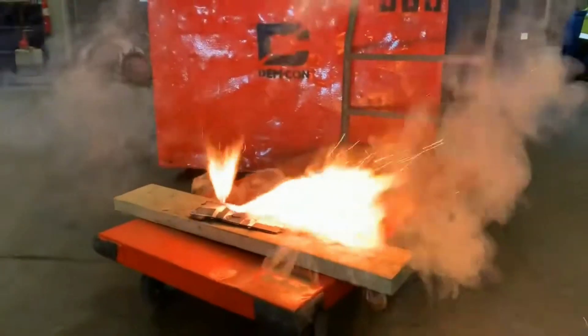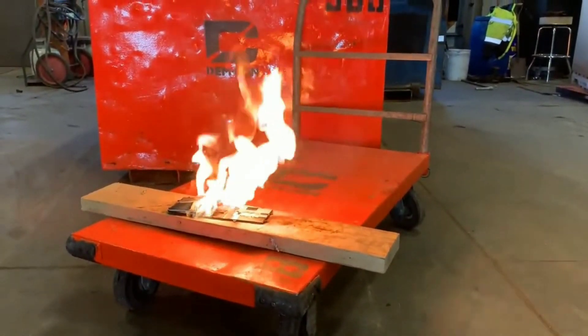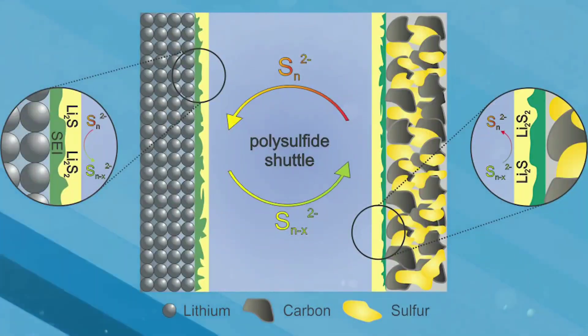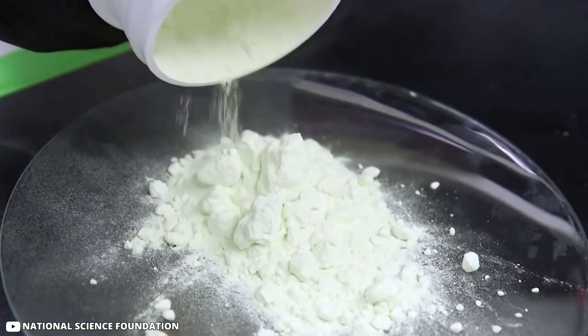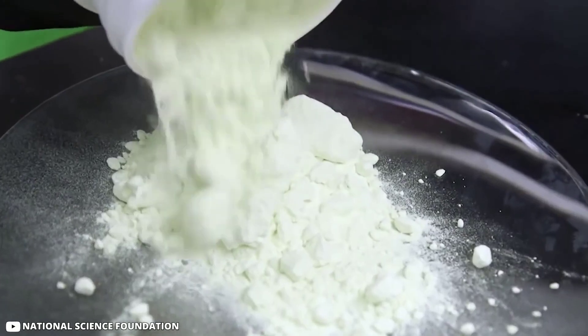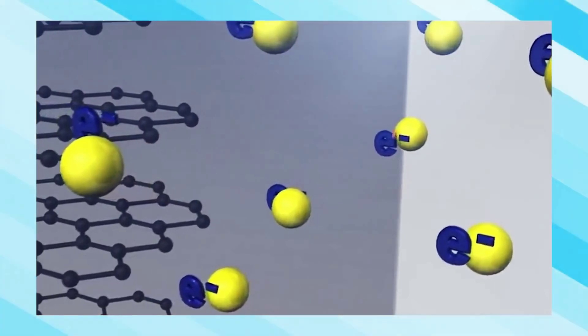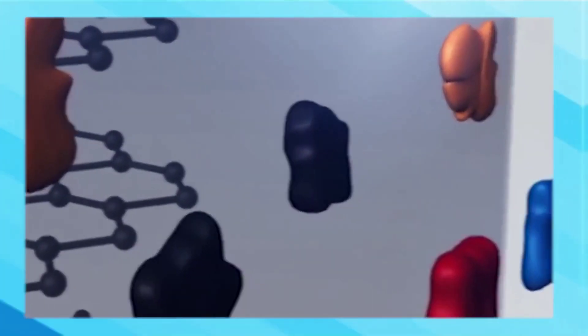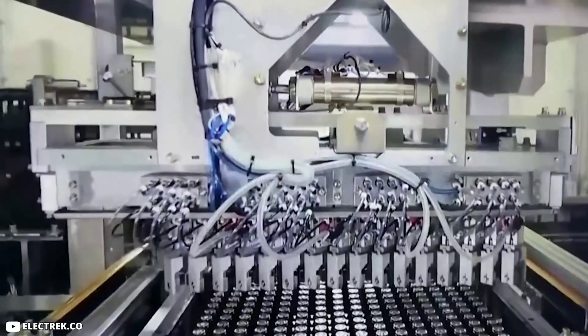Polysulfide shuttle is when soluble sulfur compounds dissolve from the cathode into the electrolyte during discharge. These compounds then migrate to the anode and react with the lithium metal, forming insoluble deposits that block the pores of the anode and reduce the capacity and efficiency of the battery. These problems lead to rapid degradation and poor cycle life of lithium-sulfur batteries.